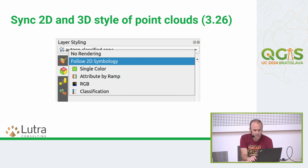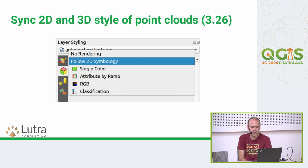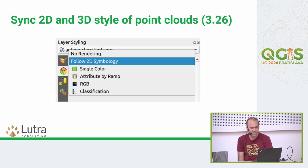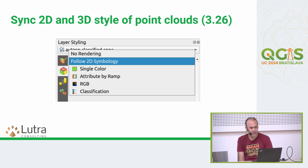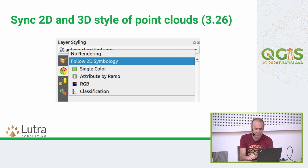Another feature introduced in 3.26 was the option to follow the 2D symbology for the 3D symbol in point clouds, because this used to lead to user confusion. The 2D and 3D symbology tabs in layer styling were very similar, and users would try to change the 2D symbology and wonder why it wasn't applied in the 3D view. Now, unless the user explicitly selects a different renderer for 3D views, the 2D symbology is followed.